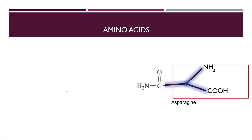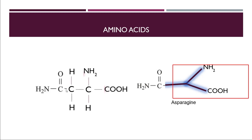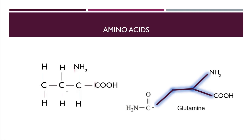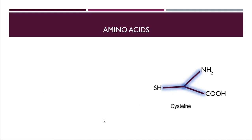Next is asparagine — fork plus the amide-containing side chain molecule. Next is glutamine — fork plus one additional carbon because the chain extends one carbon further, then attach the amide molecule. The pattern is the same: build the fork, then add the side chain.